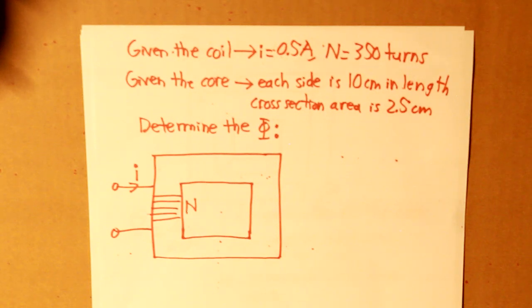Given the coil, I is equal to 0.5 amps. N is equal to 350 turns. And given the core, each side is 10 centimeters in length. And the cross-sectional area is 2.5 centimeters. Determine the flux.